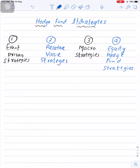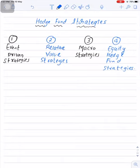Hedge fund strategies can be divided into four different categories: number one is event driven strategies, number two is relative value strategies, number three is macro strategies, and number four is equity hedge fund strategies. Each of these categories has subcategories except the third one — macro strategies do not have any subcategories. The rest of the three strategies have subcategories under them.